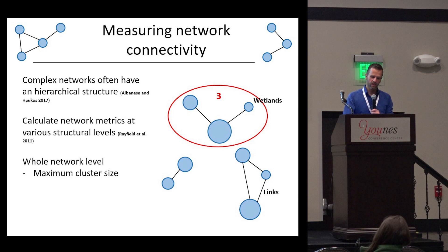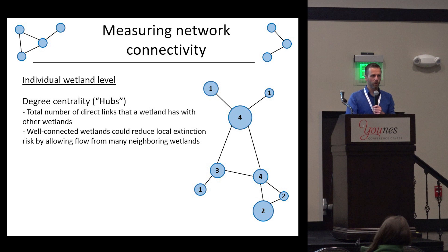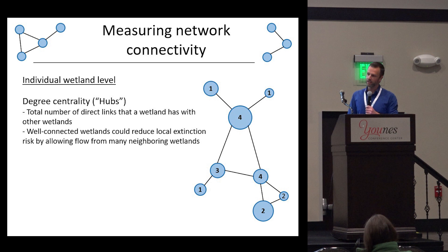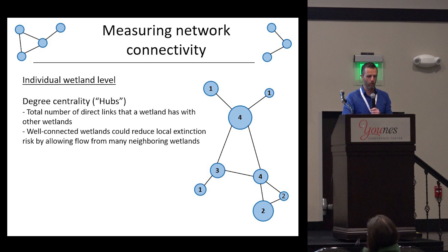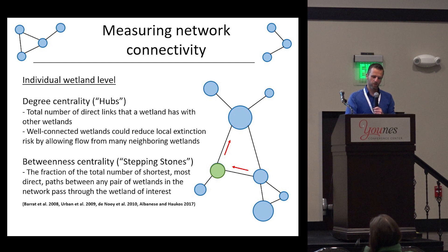Given these networks, we can calculate various ways to characterize them at different structural levels. At the whole network level, we can ask what the maximum cluster size is — in this example it's three. We can also look at how individual wetlands function. For degree centrality, which we call hub identification, we calculate the number of direct links a wetland has with other wetlands in the system. Well-connected wetlands could really reduce local extinction risk by allowing flow of individuals from many neighboring wetlands.